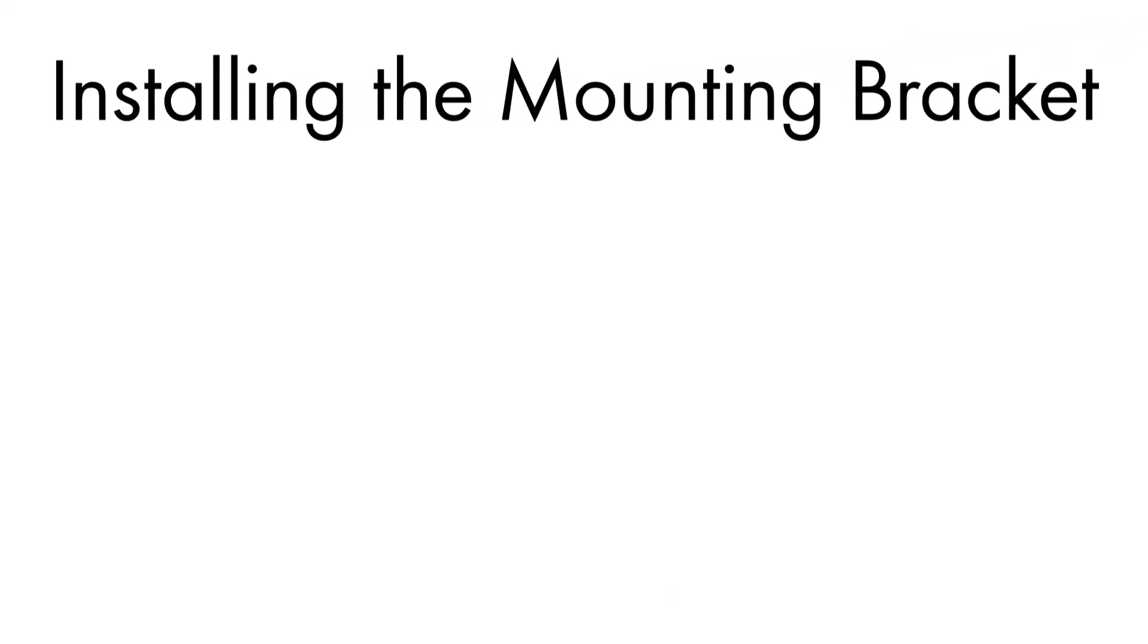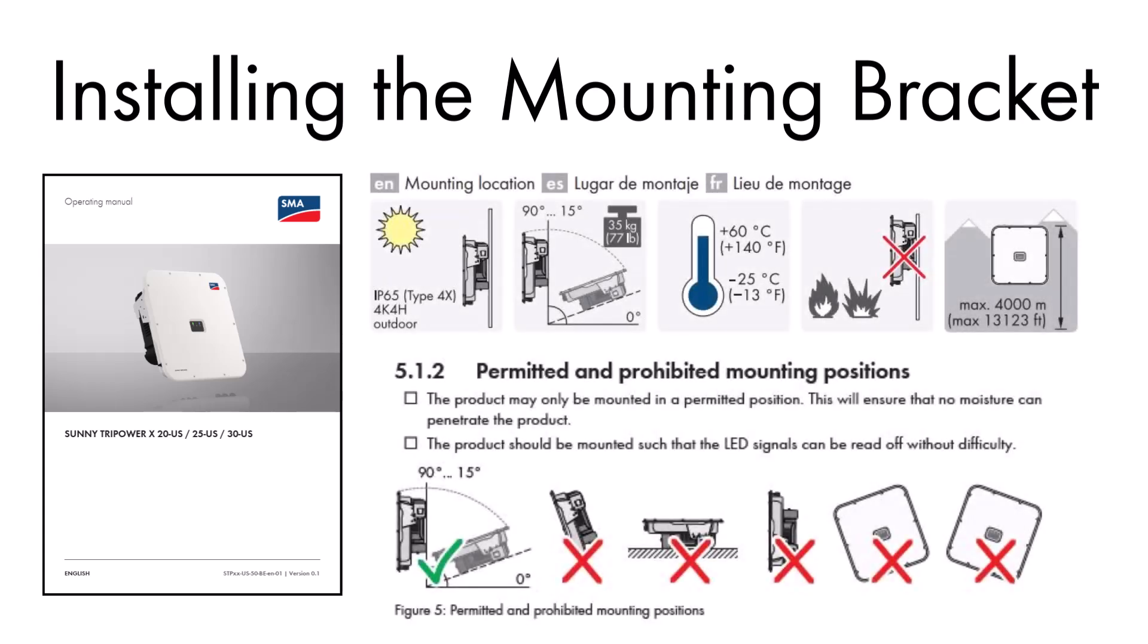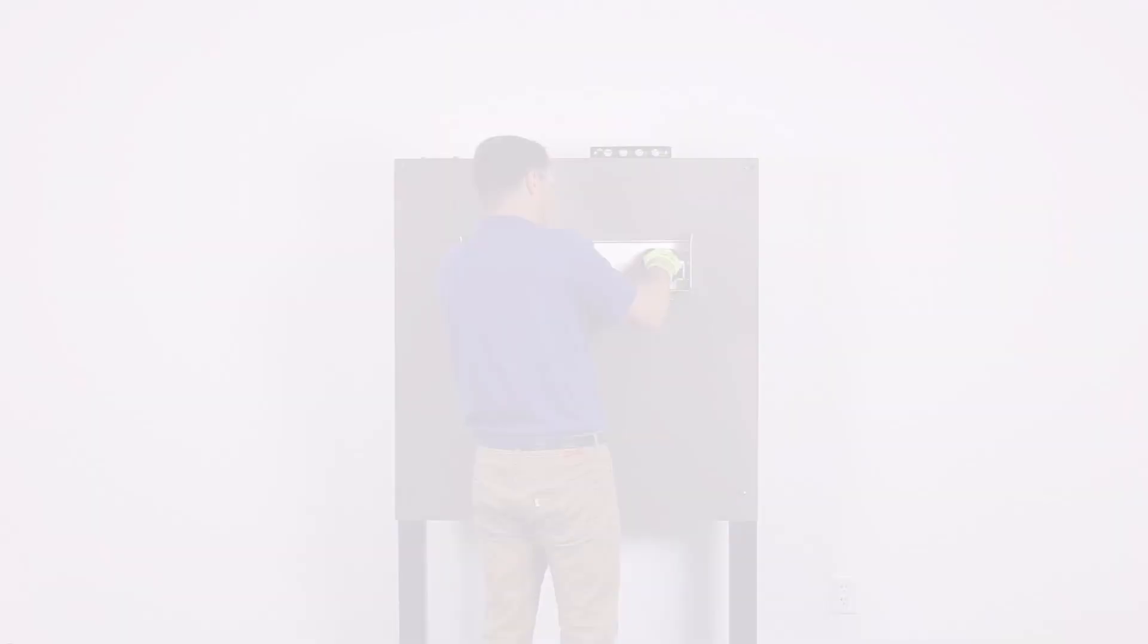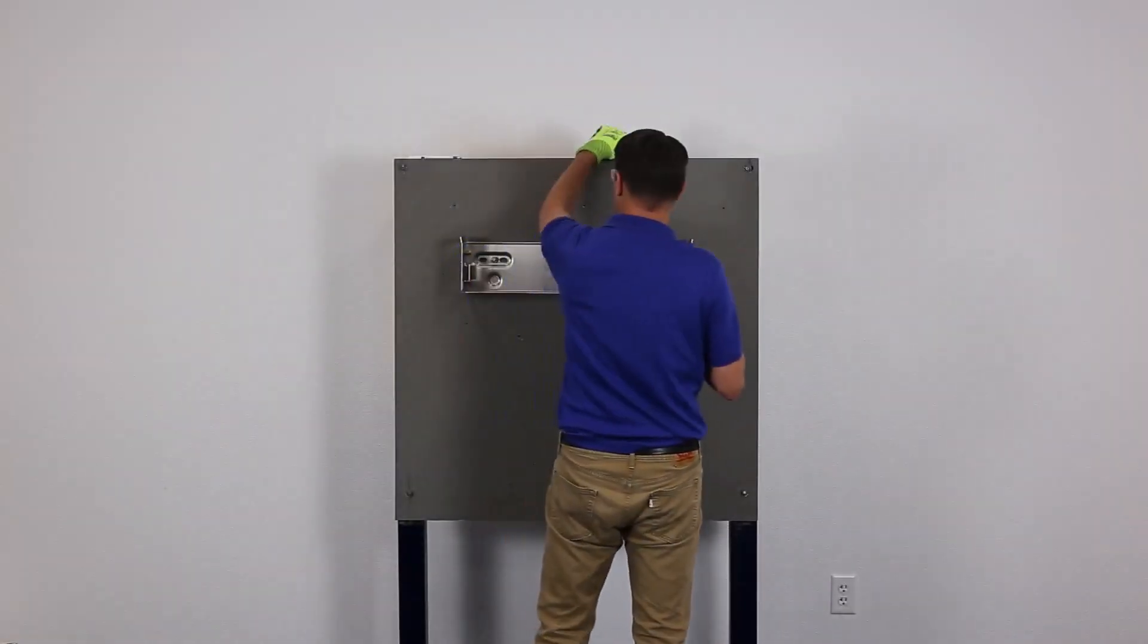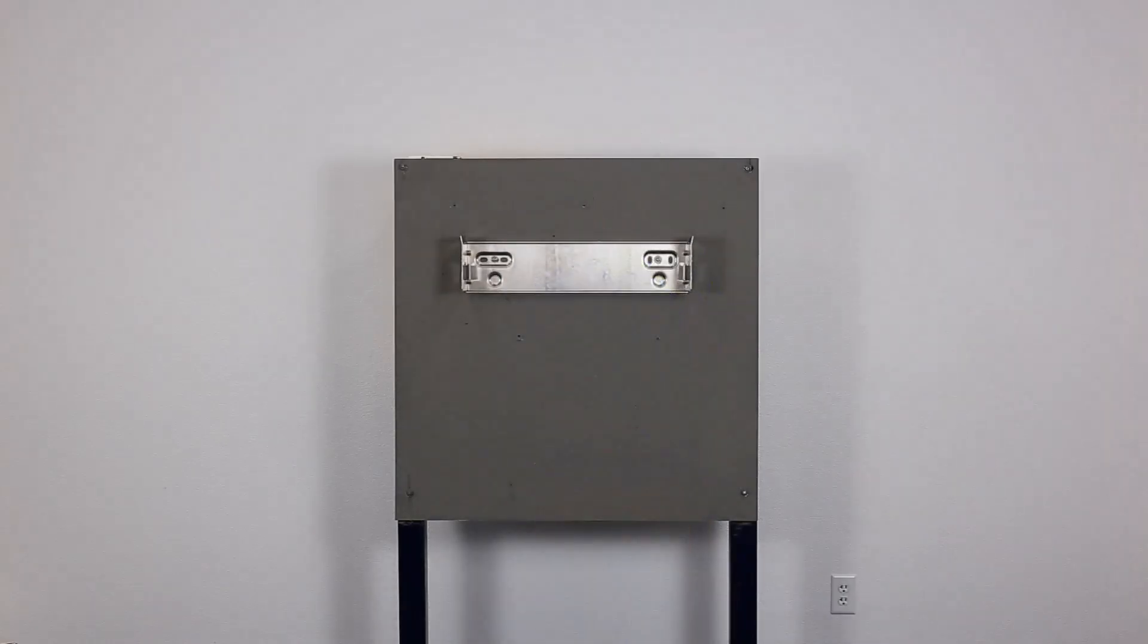Let's move on to the mounting bracket. Review the installation manual and quick reference guide for approved mounting orientations and environmental conditions. Level the mounting bracket on your chosen surface and secure it using the hardware appropriate for the mounting surface and weight of the inverter.